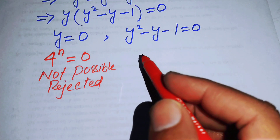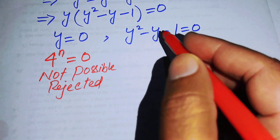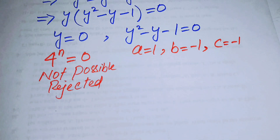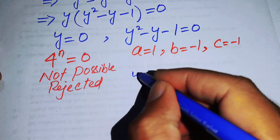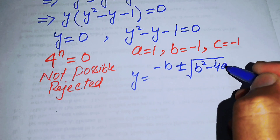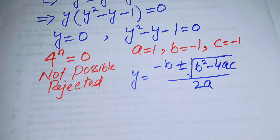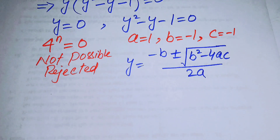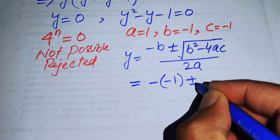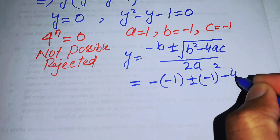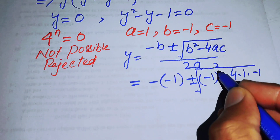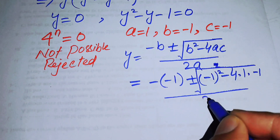We proceed with the quadratic equation y squared minus y minus 1 equals 0, finding its roots using the quadratic formula with a equals 1, b equals minus 1, and c equals minus 1. Substituting into the formula: minus b plus or minus the square root of b squared minus 4ac, all over 2a, we get 1 plus or minus the square root of (1 plus 4), all over 2.